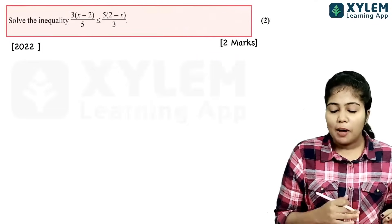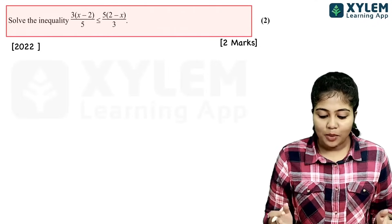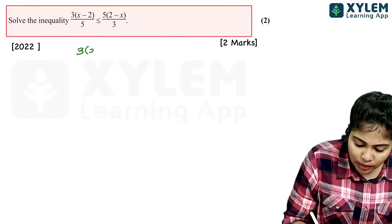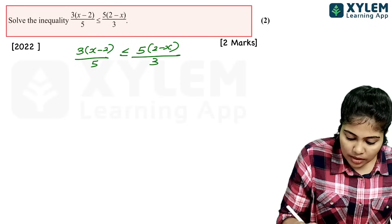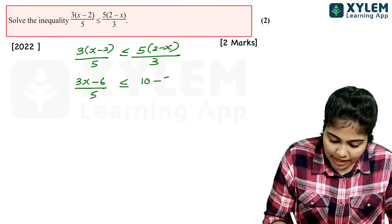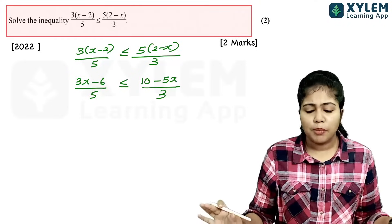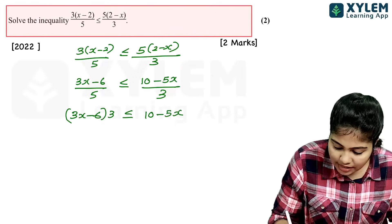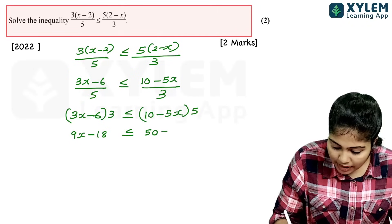Next question: 3 into (x minus 2) divided by 5, less than or equal to 5 into (2 minus x) divided by 3. We multiply out the brackets first: (3x minus 6) divided by 5, less than or equal to (10 minus 5x) divided by 3. Cross-multiplying: 3 times (3x minus 6) is less than or equal to 5 times (10 minus 5x). So 9x minus 18 is less than or equal to 50 minus 25x.